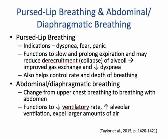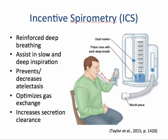Pursed lip breathing is indicated for dyspnea, fear, and panic, and helps to control the rate and depth of breathing. Abdominal or diaphragmatic breathing changes from upper chest breathing to breathing with the abdomen — it decreases ventilatory rate, increases alveolar ventilation, and expels larger amounts of gas. When using incentive spirometry, have the patient inspire about 10 times an hour while awake. This reinforces deep breathing, assists in slow and deep inspiration, prevents or decreases atelectasis, optimizes gas exchange, and increases secretion clearance.